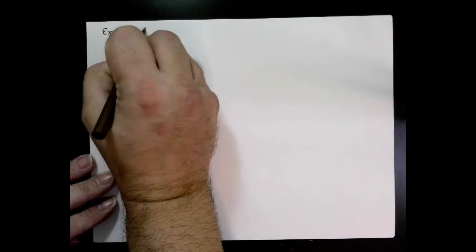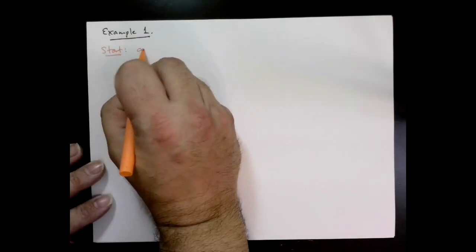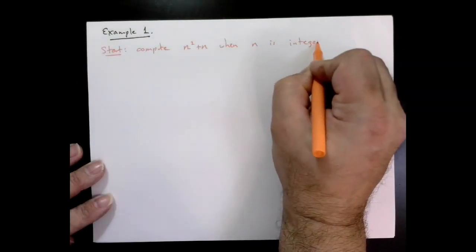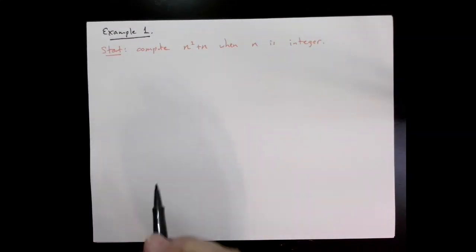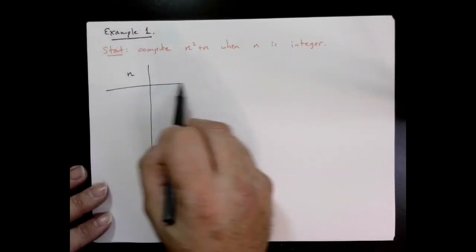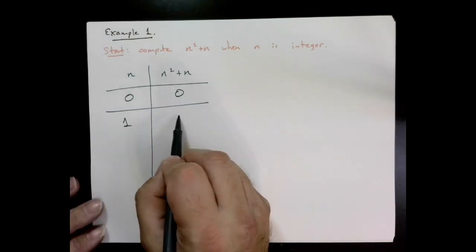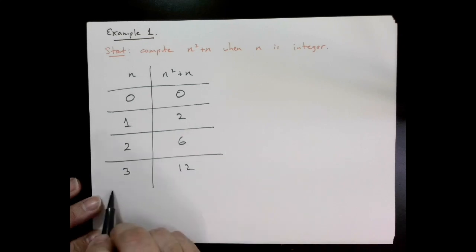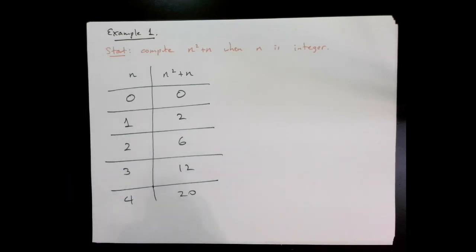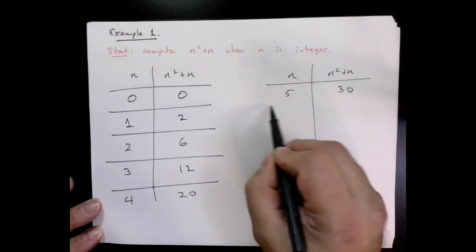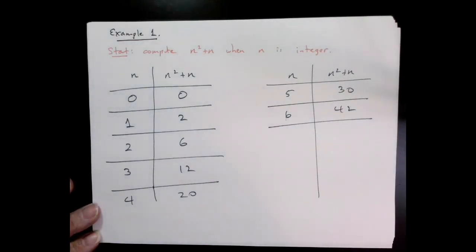Here's an example. Let's do the following computation: let's consider the function n² + n when n is an integer, and we just start plugging in values—0, 1, 2, 3, and so forth. We plug in a bunch and we notice a pattern: whatever we plug in, n² + n is always even.